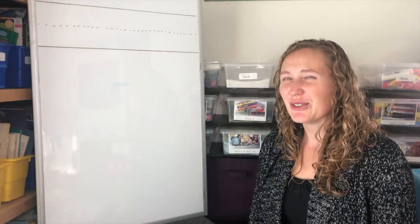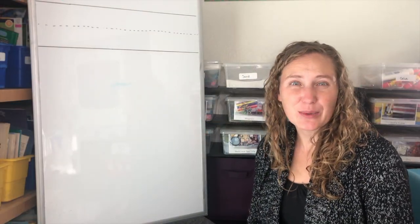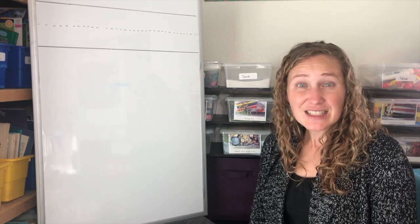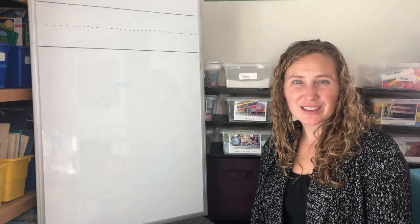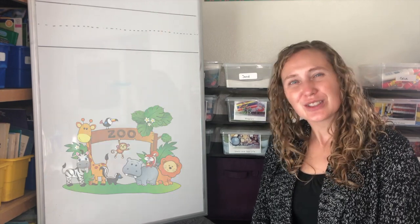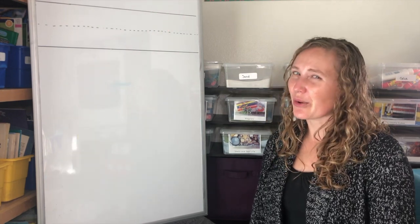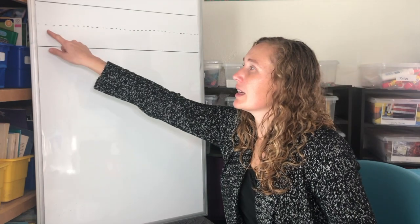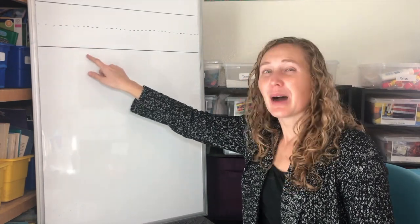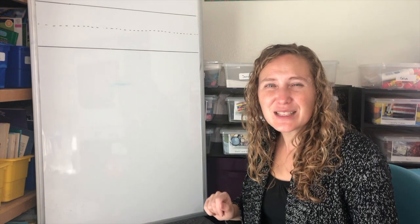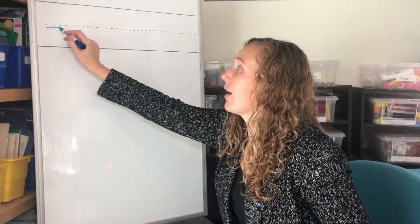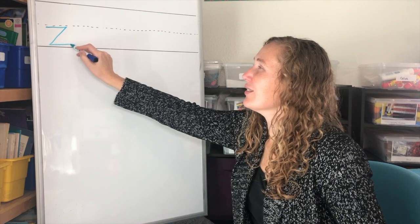Are you ready to write the letter Z with me? Let's start with the lowercase Z — that's the one we use most often for words like zoom or zoo. The lowercase Z goes between the middle dotted line and the bottom solid line. Let's make a zigzag: one, two, three.